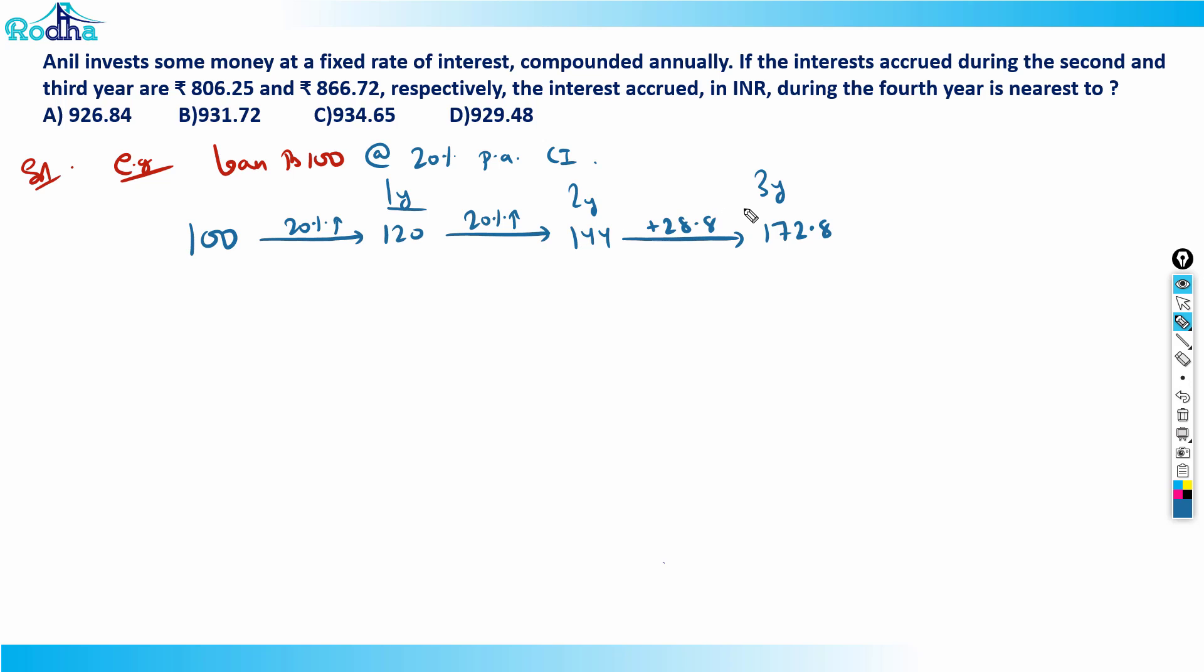So now what you can see is that the interest accrued here is: in the first year it is 20, second year it is 24, and third year is 28.8. That's a simple logic.